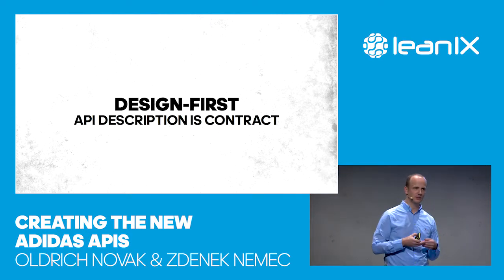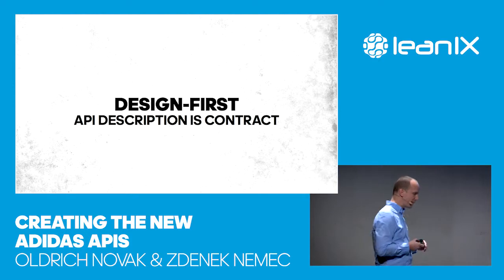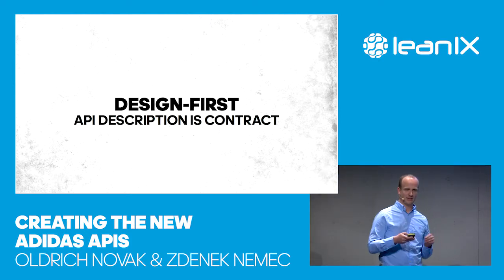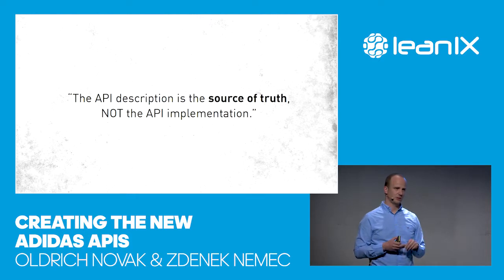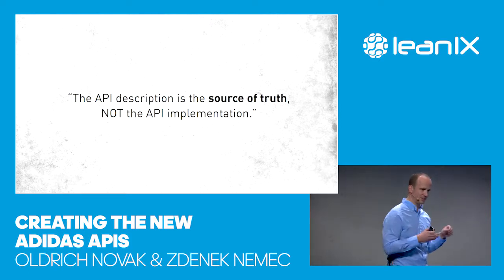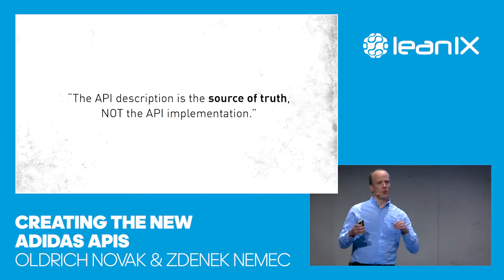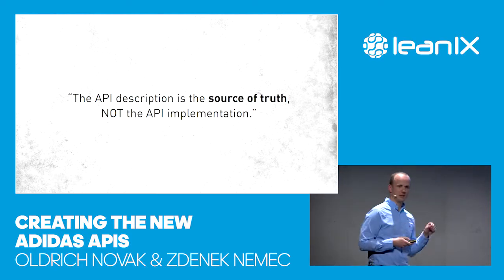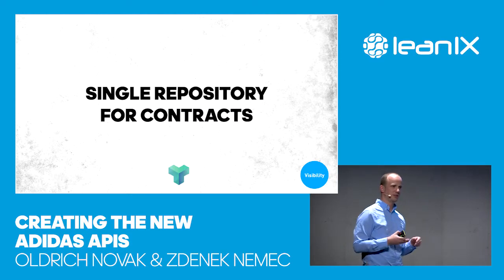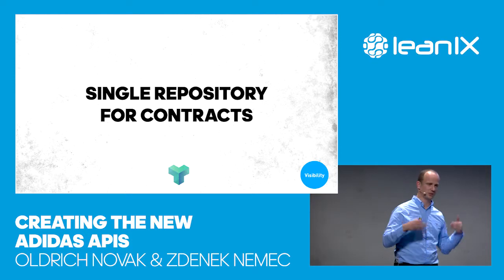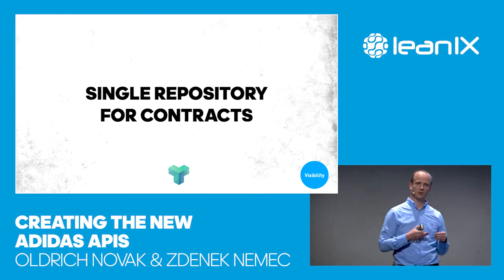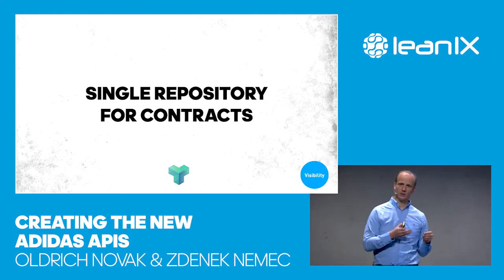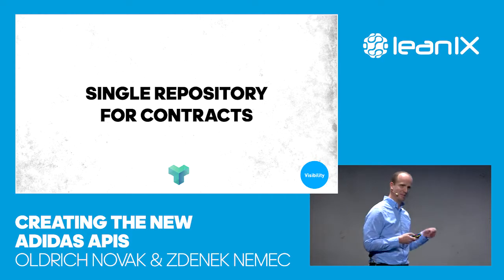The design is manifested in the API description — some of you might know RAML, WSDL, Swagger, or similar formats. The approved API description and approved API design become the contract, and it's the contract that is the source of truth, not the implementation. We want people to think about the API description as the source of truth — this is what the API should be, not the actual implementation. To get visibility into what APIs we have at Adidas, we established a repository for API descriptions and contracts, and we use the tool called Apiary for this — a single place to go to learn about all the APIs at Adidas.